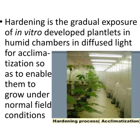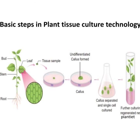To summarize the basic steps in plant tissue culture technology: a leaf portion is taken as an explant, the explant is put in tissue culture medium and becomes undifferentiated callus, the callus is separated into individual test tubes with sterilized culture medium, and these develop into new plantlets.